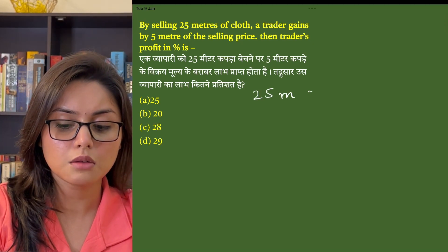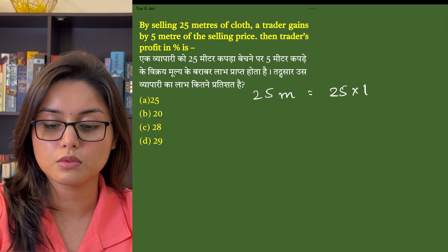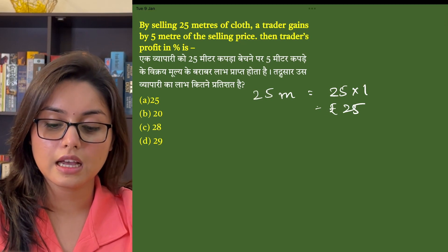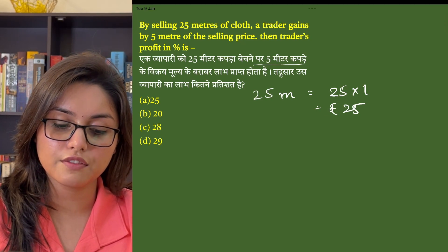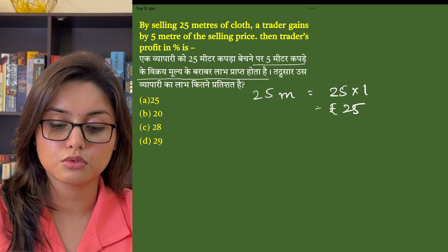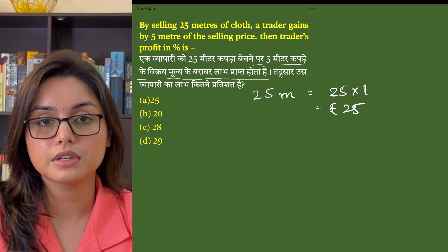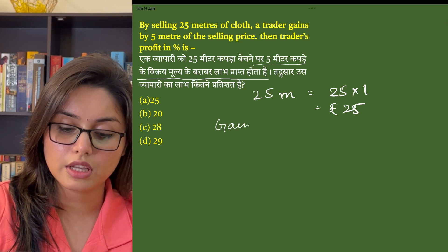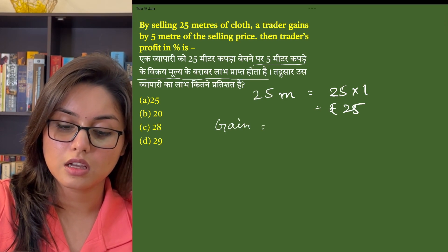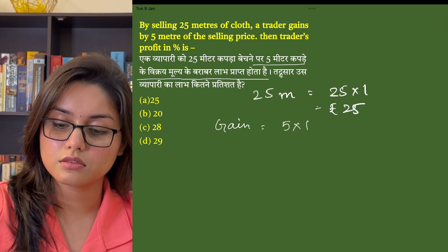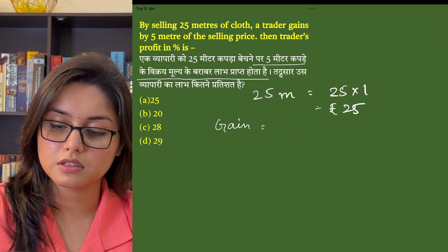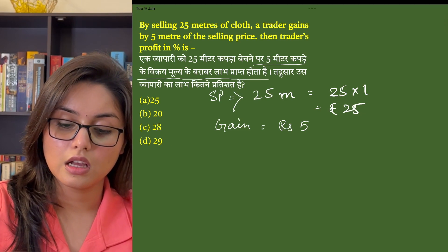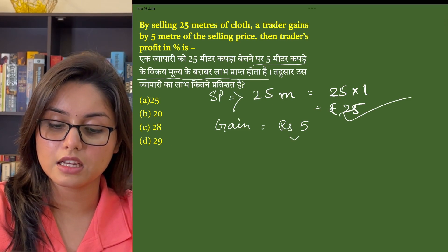So, 25 meters of cloth is 25 rupees. It is said that the gain is 5 meters. So if 1 meter of cloth is 1 rupee, our gain comes from here: 5 into 1, that is 5 rupees. And this is our selling price — when we get the selling price, we get the gain.